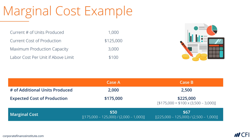In case A, producing more units is cheaper because the fixed costs are already covered and there are some economies of scale. In case B, however, it's not as effective because it goes beyond the production capacity and has increased variable costs. In each case the firm would need to charge at least the marginal cost in revenue to recoup all of its money.